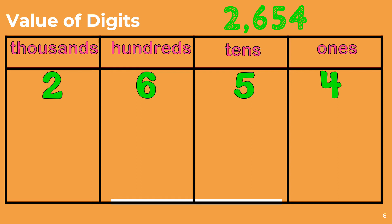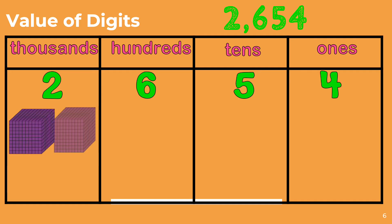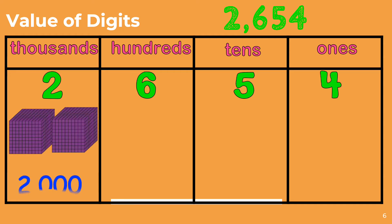We will start with the 2 in the thousands place. Since there are 2 in the thousands place, we will use 2 one-thousand blocks. To determine the value of the 2 in the thousands place, we will count each block by 1,000: 1,000, 2,000. So the value of the 2 in the thousands place is 2,000.